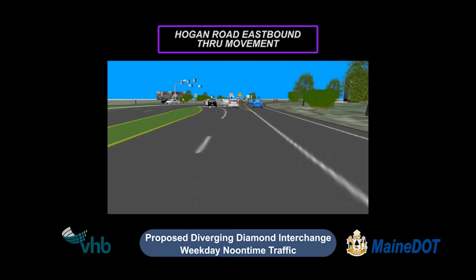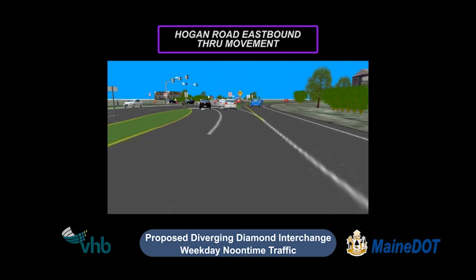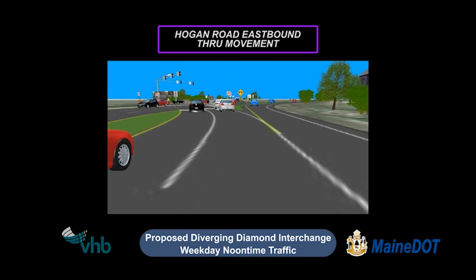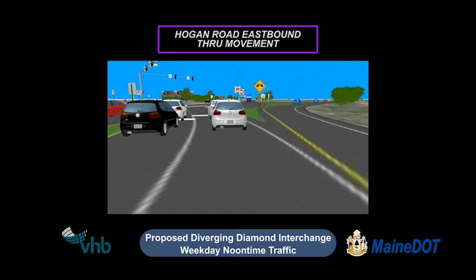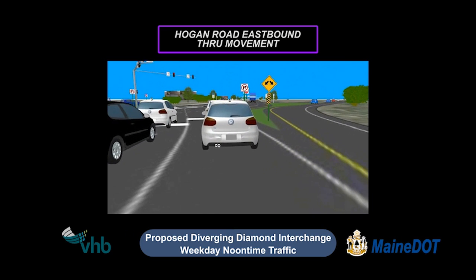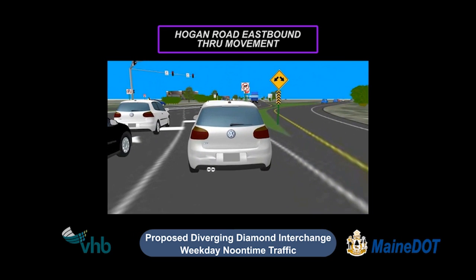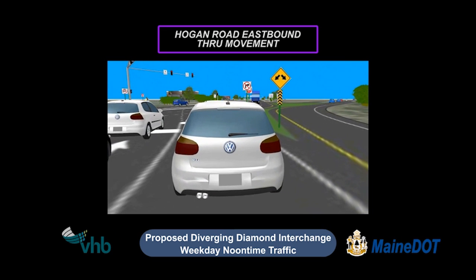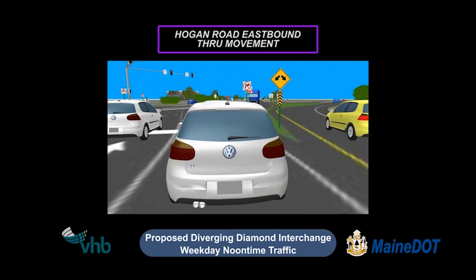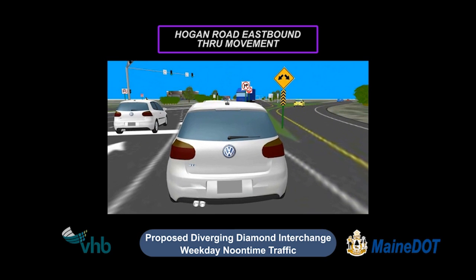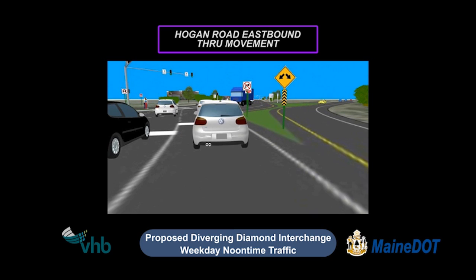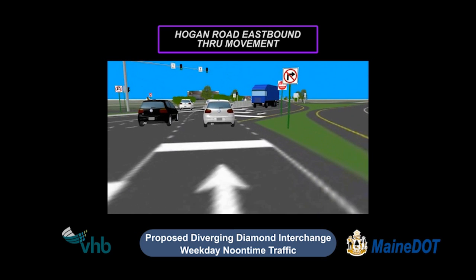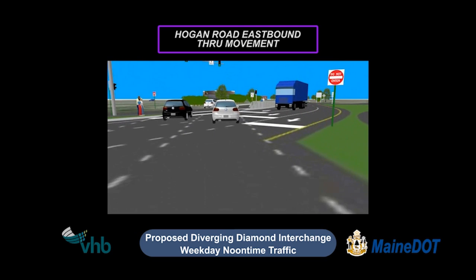Heading east on Hogan Road, you drive straight, passing the southbound on-ramp on your right. As you approach the first crossover, you'll stop for westbound traffic crossing in front of you. When the light turns green, you'll continue through the crossover. At this point, you are guided to the left side of the road.